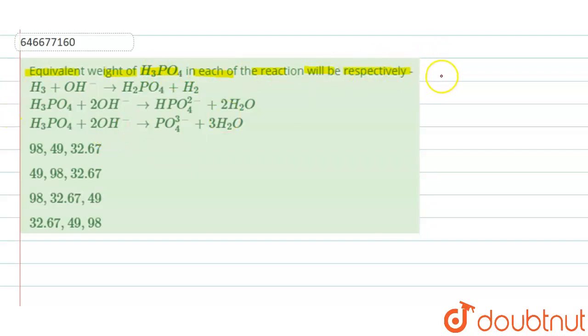So first of all we have to actually find the molecular weight of H3PO4. Molecular weight of H3PO4 - we know that it has got 3 hydrogen plus 1 phosphorus and 4 oxygen, that is 3 into